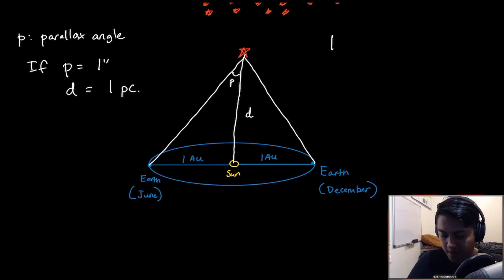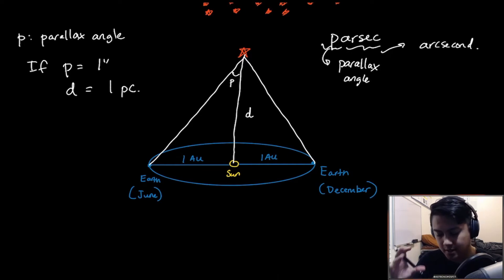Essentially, if we think about parsec, we can think of P as parallax angle, and then arcsec as arc second. So a parsec is when the parallax angle is one arc second.